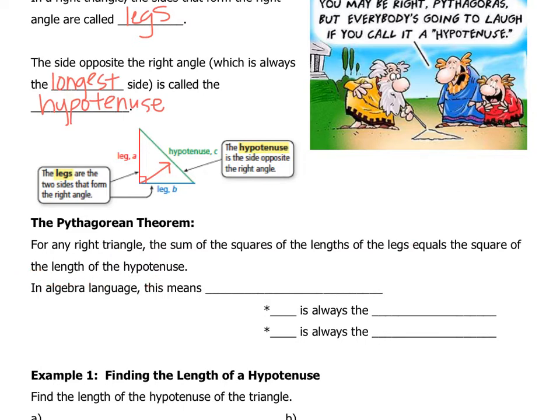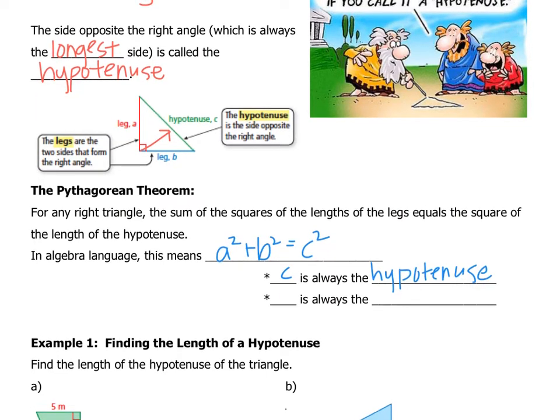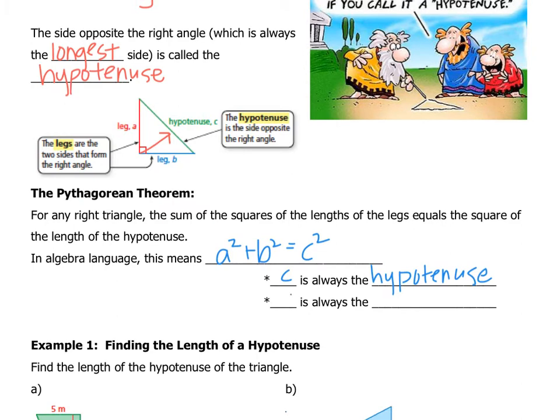What we write to shorten all that is a squared plus b squared equals c squared. We say a and b are the legs, as you see in the picture, and then we use the letter c for the hypotenuse. Now, c is always the hypotenuse, and also c is always the longest side.